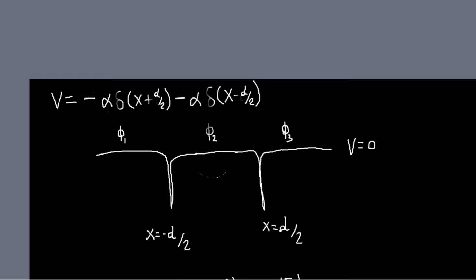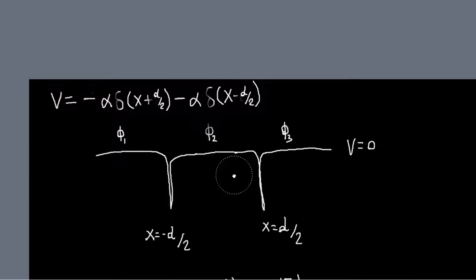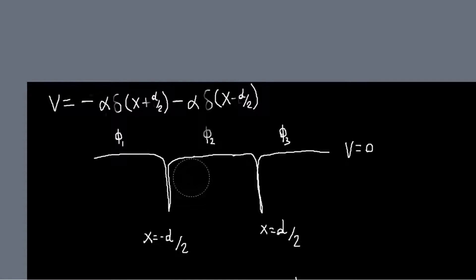One thing we'll need is obviously our new boundary condition for when we're dealing with delta wells, which is that the wave function is discontinuous across the well. Another thing that we can use for this problem is that because our potential is symmetric,